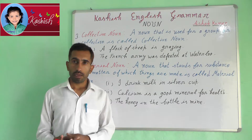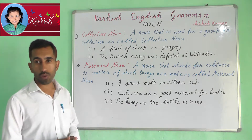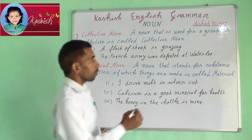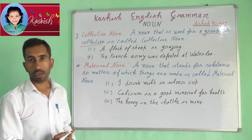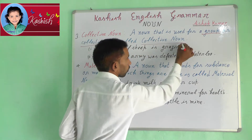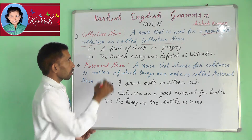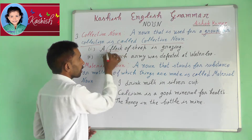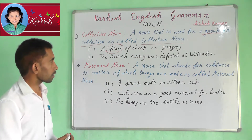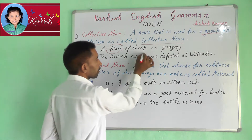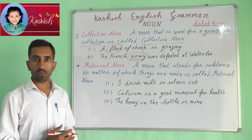Third, Collective Noun. A noun that is used for a group or collection is called a Collective Noun. For example, a flock of sheep is grazing. The French army was defeated at Waterloo.